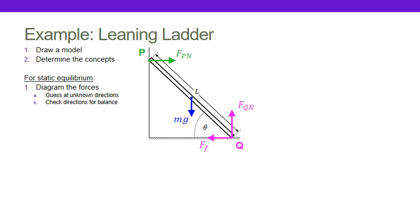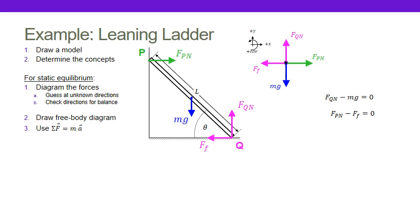We saw that it was at rest, so forces and equilibrium are probably good concepts. Once we know we want to use static equilibrium, we can diagram our forces — just draw where they are on our object. If we don't know directions, we can guess, and then use what we know about forces and torques having to balance to verify that our directions are correct. Once we've got that, we can draw our free body diagram and use Newton's second law.